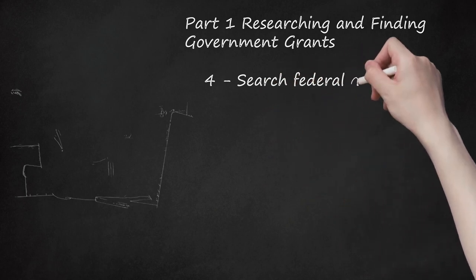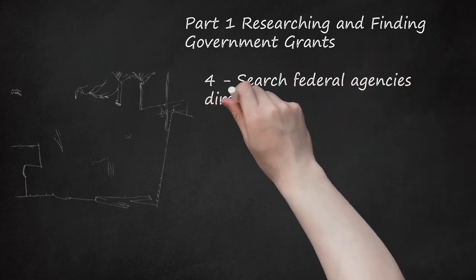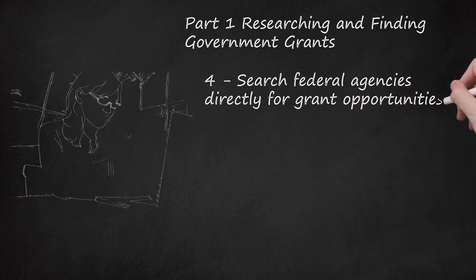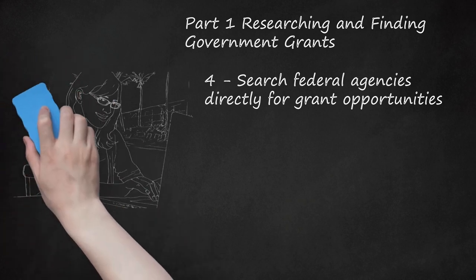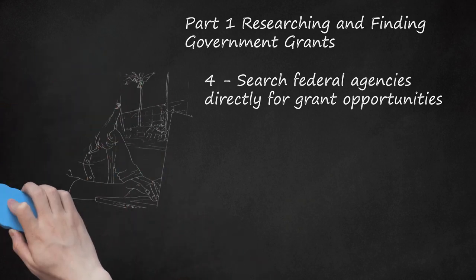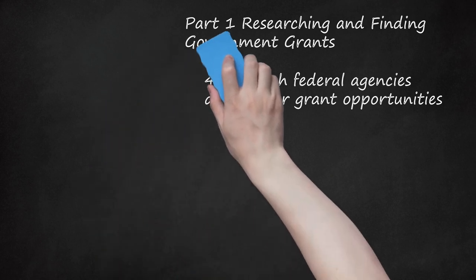Step 4: Search Federal Agencies Directly for Grant Opportunities. In addition to the wide range of information available at grants.gov, you may also wish to search individual federal agencies. For example, if you represent a school or school district, you may be interested to find if the Department of Education has any grants for which you may apply. You could visit the website of the Department of Education.